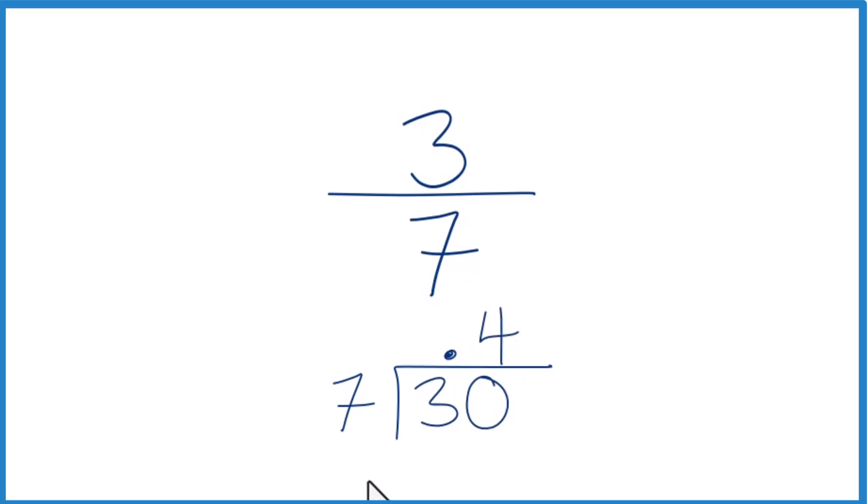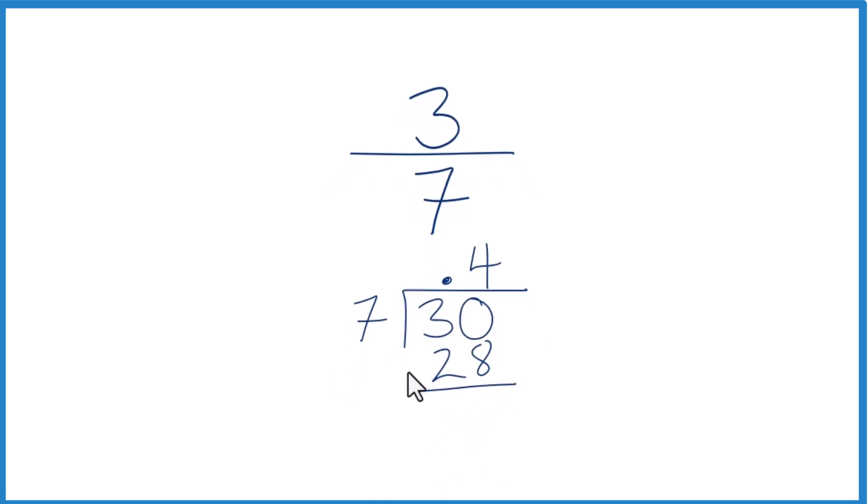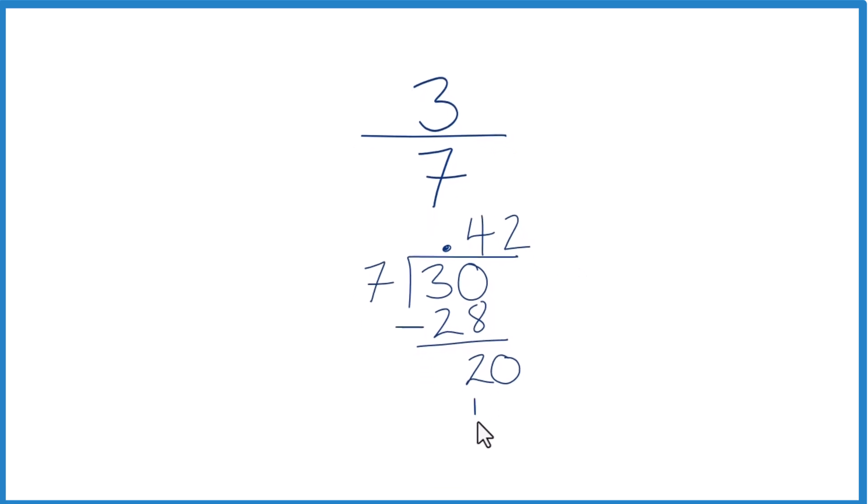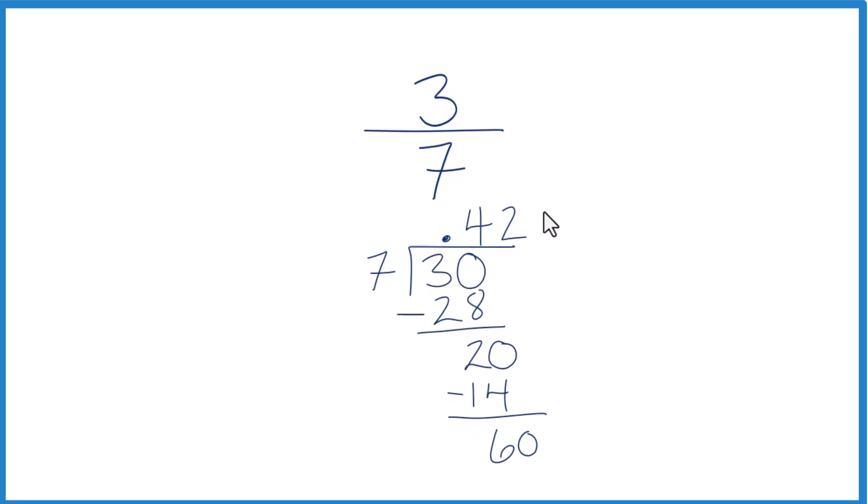7 times 4, that's 28. So 30 minus 28 is 2. 7 doesn't go into 2. We're going to call it 20 and move over 1. 2 times 7, that's 14. We subtract and we get 6. 7 doesn't go into 6. We're going to call it 60 and move over 1. And now 7 times 8, that's 56.